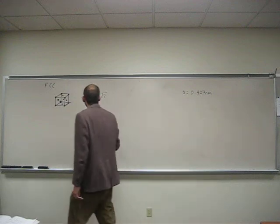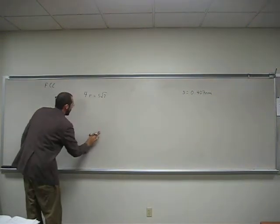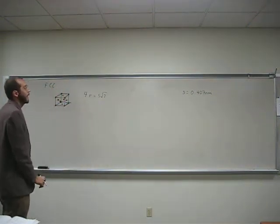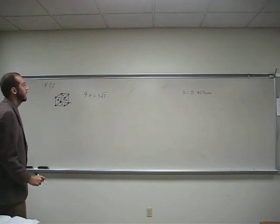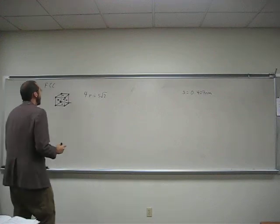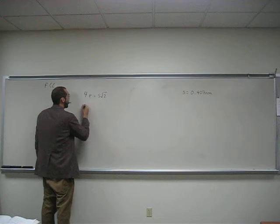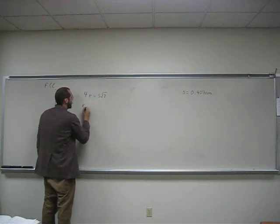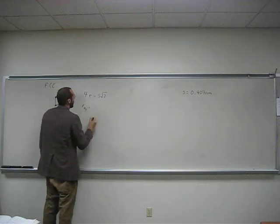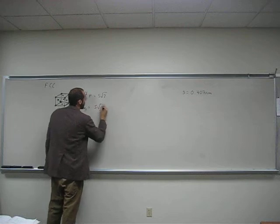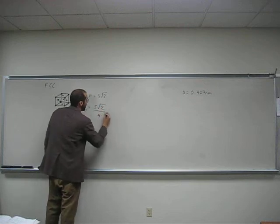Okay, and we can actually just do this in nanometers, because it doesn't give us any instructions as to what units it wants its radius in. So, the radius of silver is going to be S square root of 2 divided by 4.